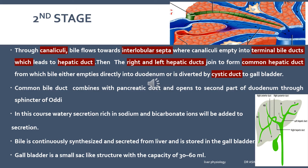In the duct system, the watery secretion rich in sodium and bicarbonate ions is added to the bile. This watery secretion is a contribution of the cells lining the duct system. Secretin hormone acts here — in the presence of secretin, there will be more water-rich, sodium-rich, bicarbonate-rich secretion from the liver.